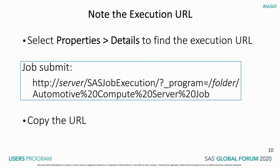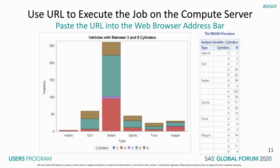Select Properties, then Details, and locate the execution URL in the Job Submit section of the Properties dialog. This is the URL that you use to execute the job. The fully qualified URL contains the server address, and the _program URL parameter specifies the URL-encoded location and name of your job. Note that space characters in the job name have been encoded as %20. Copy the URL. Now you are ready to execute your SAS code using only a web browser client. Paste the URL into the address bar of your web browser. The code executes and the results are the same as what we saw earlier when the code was executed using the SAS client.